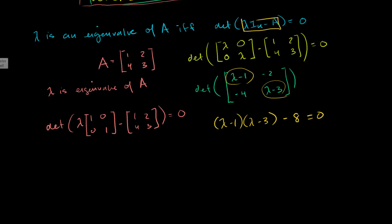So now we have an interesting polynomial equation right here. We can multiply it out. We get what? Let's multiply it out. We get lambda squared minus 3 lambda minus 3 lambda minus lambda plus 3 minus 8 is equal to 0. Or lambda squared minus 4 lambda minus 5 is equal to 0.